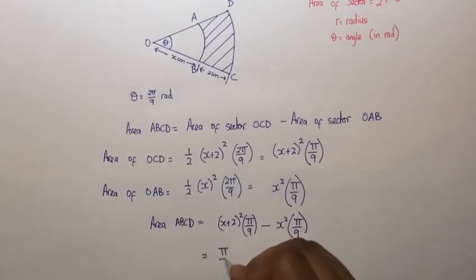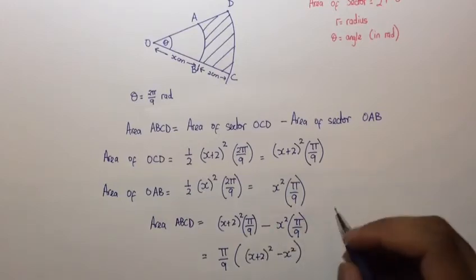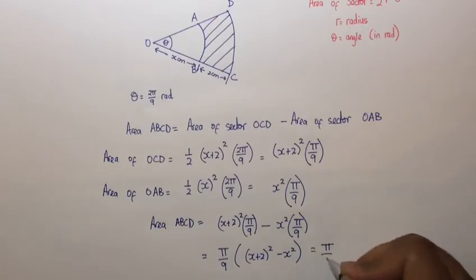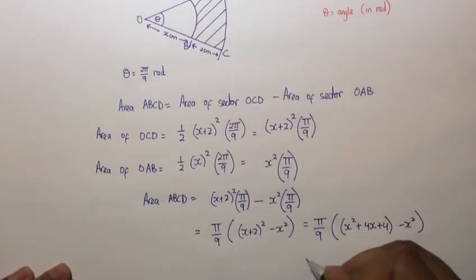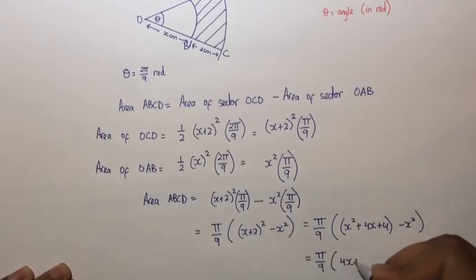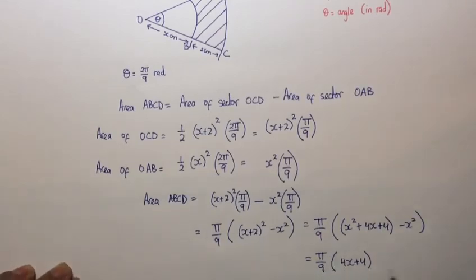If we take out π/9, we have (x+2)² minus x². Expanding this out, we get x² plus 4x plus 4 minus x², which equals π/9 times (4x + 4). So the area ABCD equals π/9 times (4x + 4).